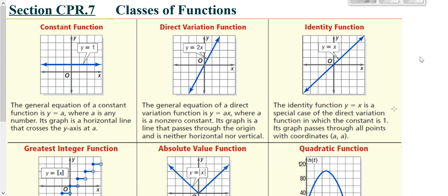We're going to be classifying different functions according to their names. We're going to review some of this stuff. A constant function in the upper left here would be a horizontal line, always in the form of y equaling just a number.